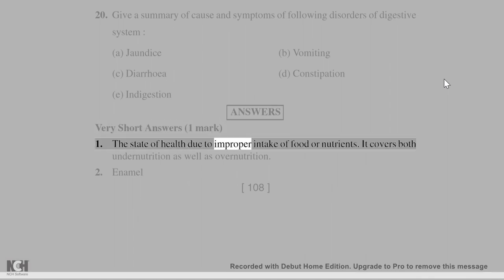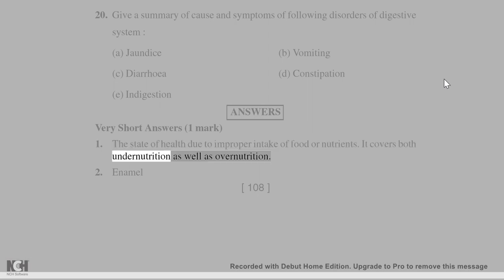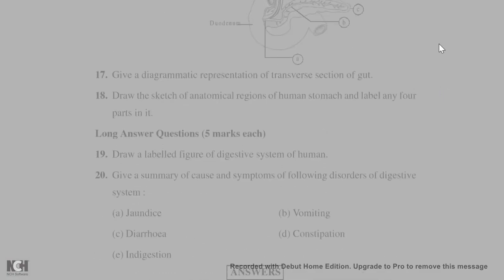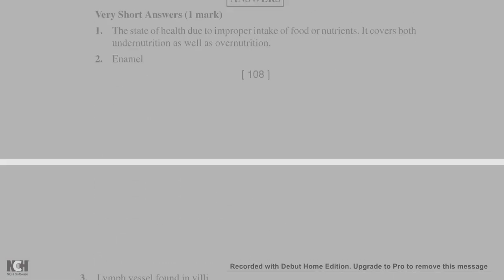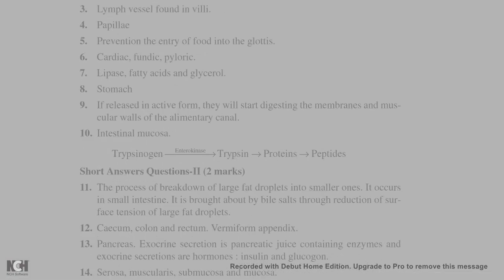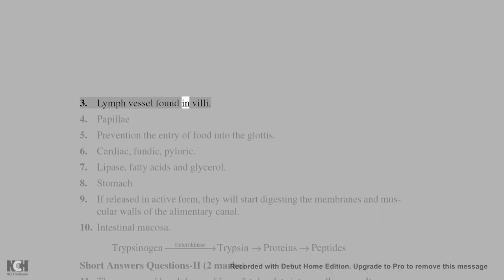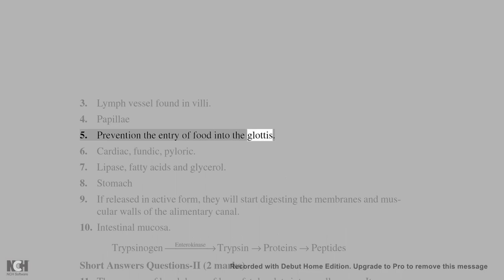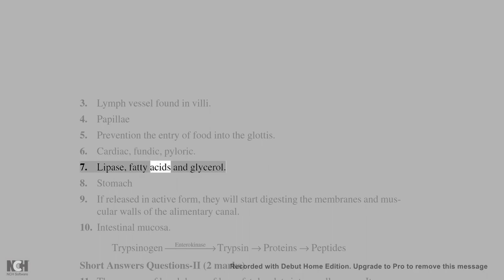Answers — Very short answers (1 mark): 1. Malnutrition: the state of health due to improper intake of food or nutrients; it covers both undernutrition as well as overnutrition. 2. Enamel. 3. Lymph vessel found in villi. 4. Papillae. 5. Prevention of entry of food into the glottis. 6. Cardiac, Fundic, Pyloric. 7. Lipase; end products are fatty acids and glycerol. 8. Stomach.